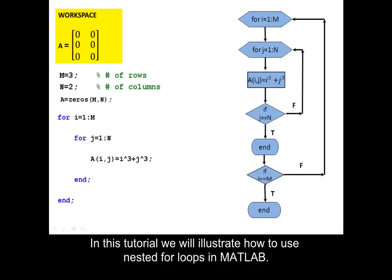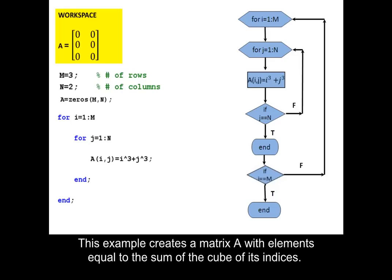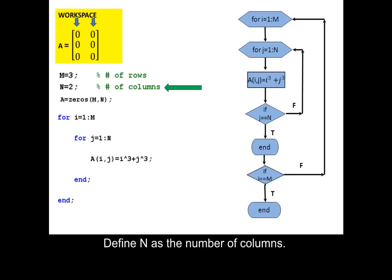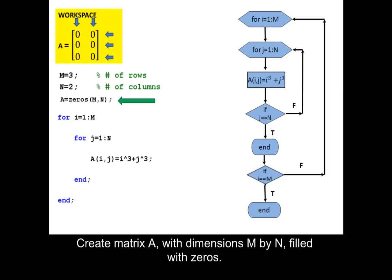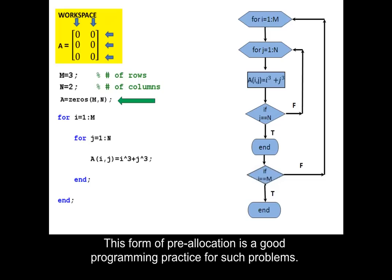In this tutorial we will illustrate how to use nested for loops in MATLAB. This example creates a matrix A with elements equal to the sum of the cube of its indices. Define M as the number of rows and N as the number of columns. Create matrix A with dimensions M by N, filled with zeros. This form of pre-allocation is a good programming practice for such problems.